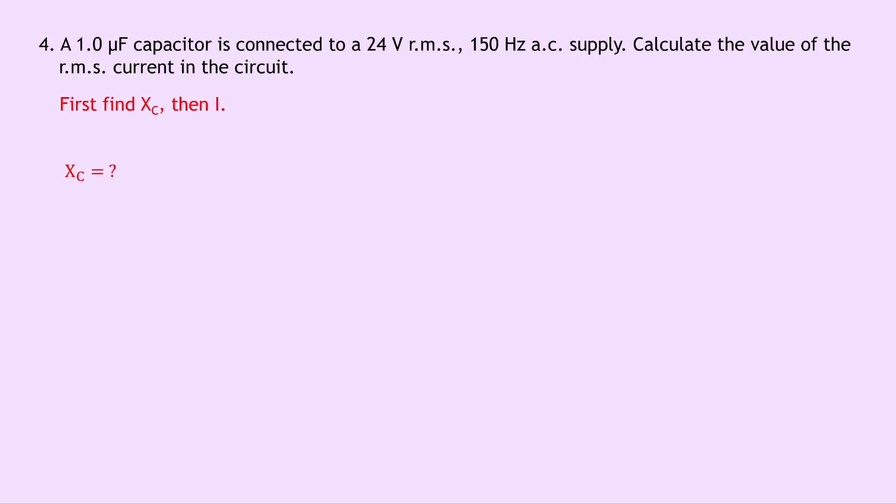So writing down what we know, we have XC is what we're trying to find. Frequency F is 150 hertz, and the capacitance C is 1.0 microfarads, which can be rewritten as 1 times 10 to the minus 6 farads. Writing down our equation then, we have XC equals 1 over 2 pi FC.